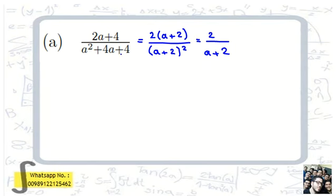If we factor out 2 in the numerator, it would be 2 times (a plus 2). We can also write the denominator as a perfect square: (a plus 2) squared. Now we can cancel (a plus 2) from numerator and denominator, and we reach 2 over (a plus 2). That's the simplest form.